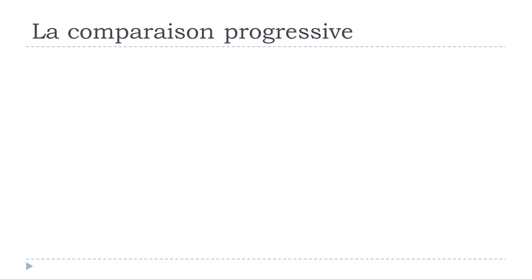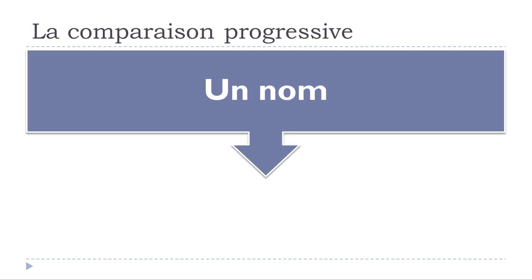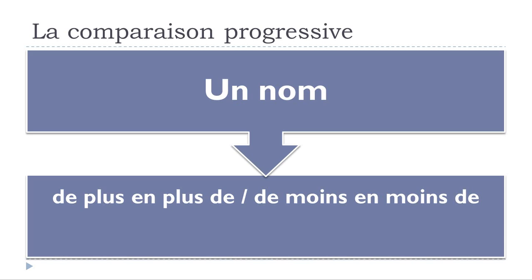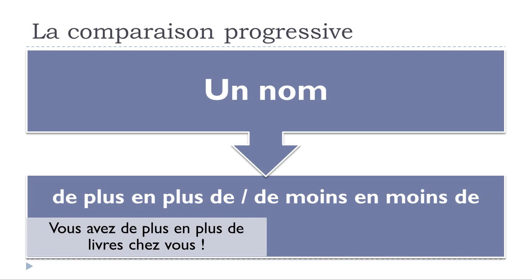So let's see now how it will work with un nom. In that case, you can see that it's a bit different, because you will have to use de plus en plus, but then keep in mind that you should put de as well, and then de moins en moins de. So: vous avez de plus en plus de livres.